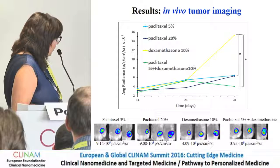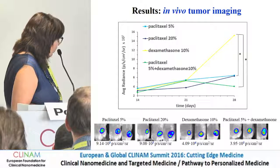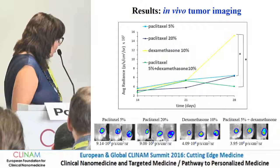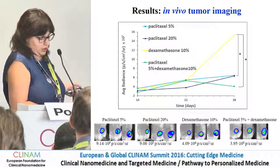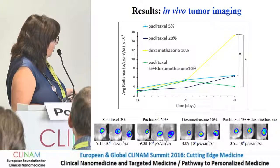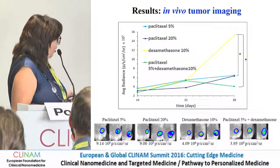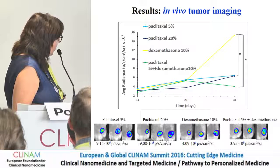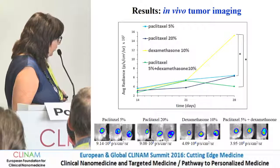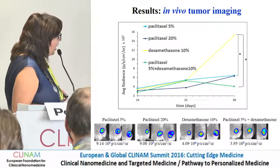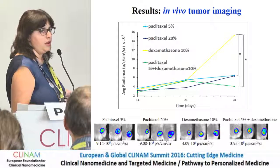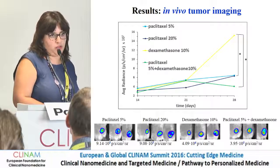We can see in all groups that the approximate location of the implant shows lower signal, and as we go further from the implant, the signal increases until we reach the margin. The group receiving dexamethasone only without paclitaxel had the highest signal, meaning the highest amount of live cancer cells. The group receiving dexamethasone and paclitaxel at the end of the experiment had the lowest signal, and it's also the only group that demonstrated a decrease in signal over time, meaning the cancer cells are dying.